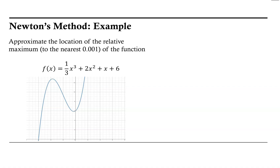Welcome. Let's look at using Newton's method to approximate the location of a relative maximum to three decimal places of the function f(x) = ⅓x³ + 2x² + x + 6. We have a graph of the function below.